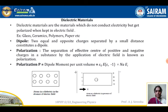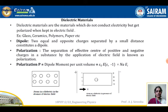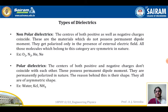Looking at the diagram, on the left side we see atoms in a dielectric in the absence of an electric field — the centers of positive and negative charges are randomly distributed. On the right-hand side, when the material is placed in an electric field, there is a separation of positive and negative charges. This separation of effective centers is known as polarization.